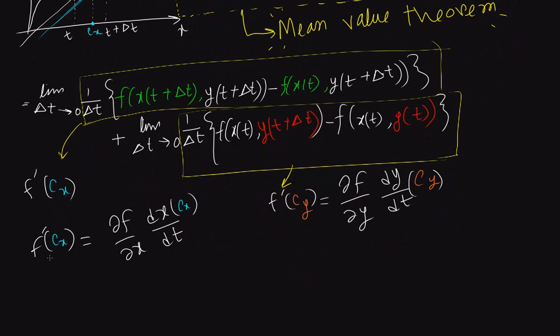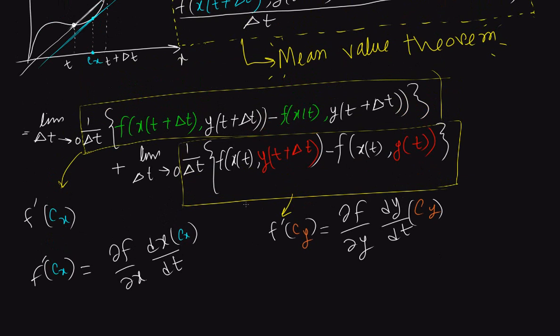If we break down this expression, it looks like this. Because if we differentiate f, we first differentiate with respect to x, then we differentiate x with respect to t using single variable chain rule. We do the same over here. Then we replace this expression by these expressions.